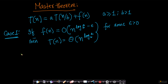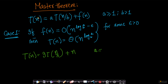Imagine you have the recurrence T(n) = 9T(n/3) + n. Here a = 9, b = 3 — both satisfy a ≥ 1 and b > 1. And f(n) = n.